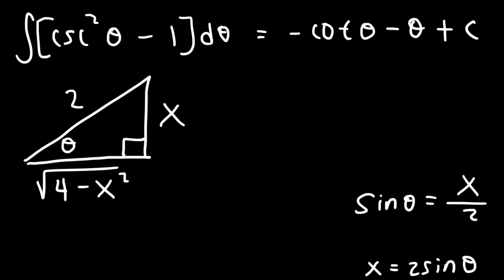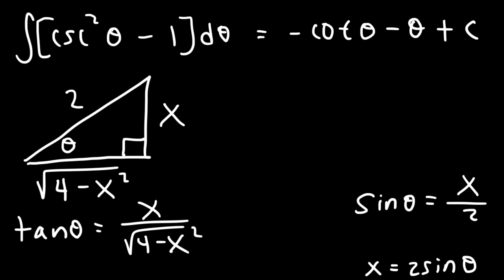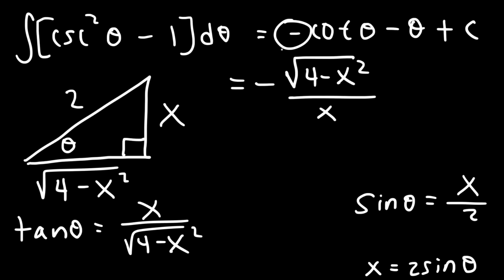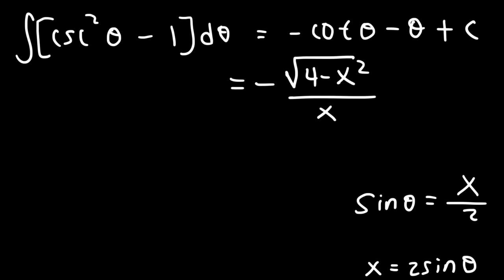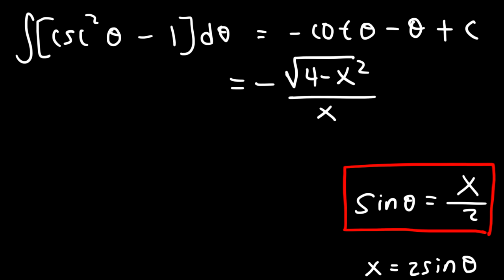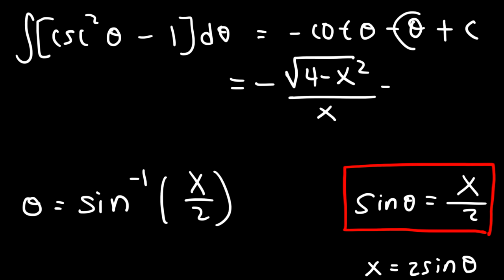Now we can figure out what tangent and cotangent are. Tangent is opposite over adjacent, so it's x over the square root of (4 minus x squared). Cotangent is the reciprocal of tangent, so cotangent is square root of (4 minus x squared) over x, and we do have a negative sign. As for theta: since sine theta equals x over 2, theta must be arc sine of x over 2. So we replace cotangent with negative square root of (4 minus x squared) over x, and replace theta with arc sine of x over 2.